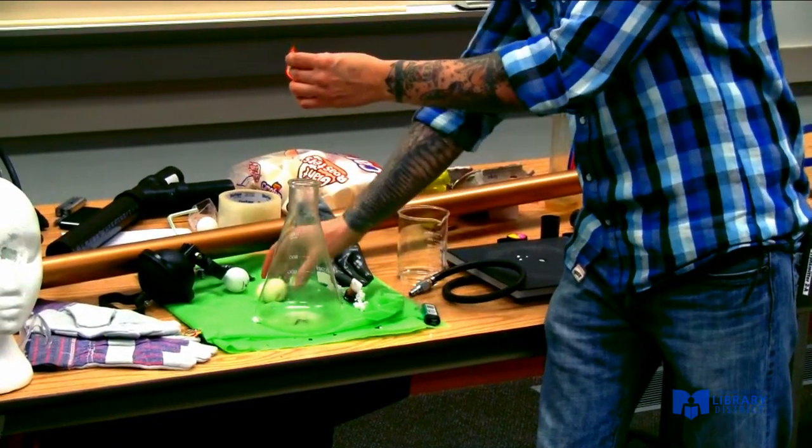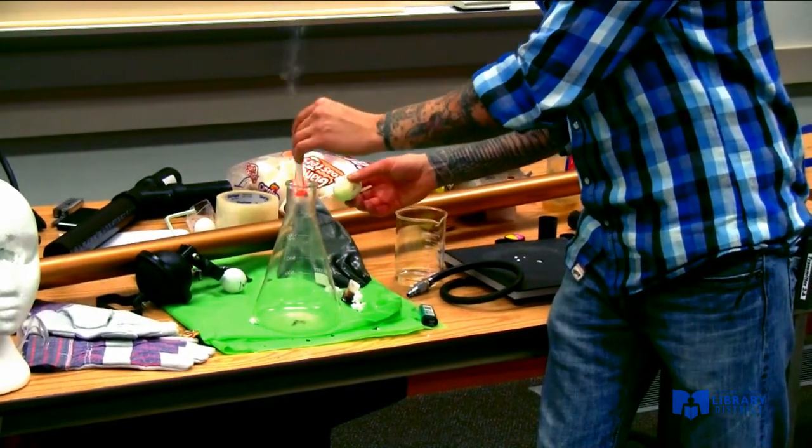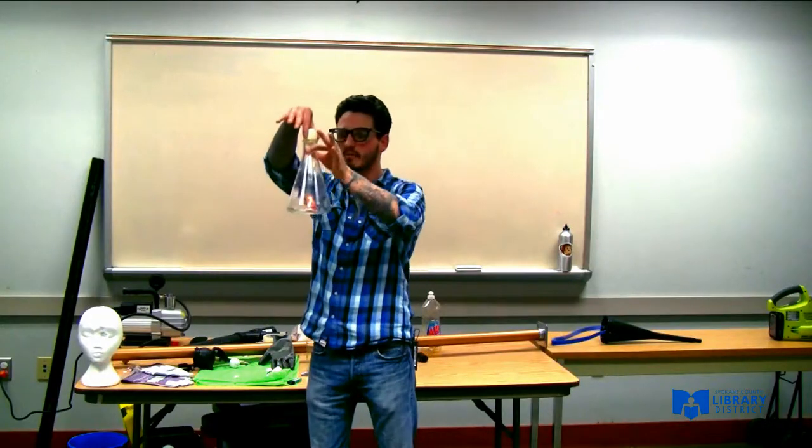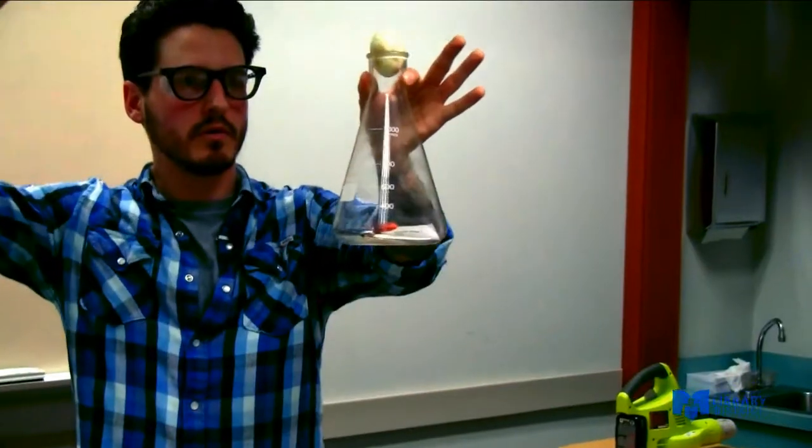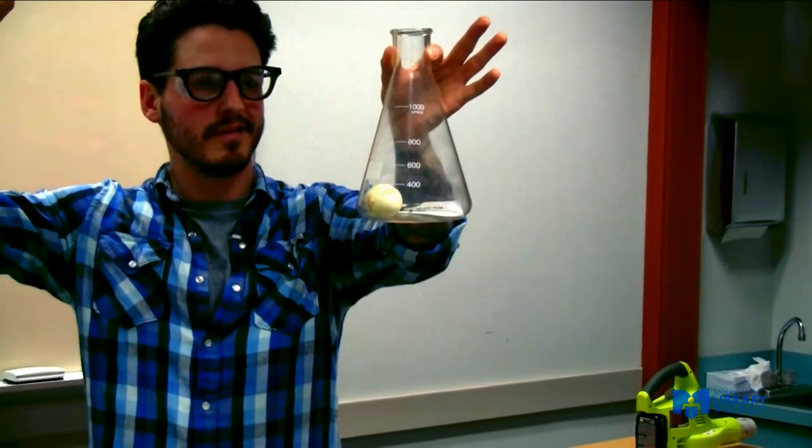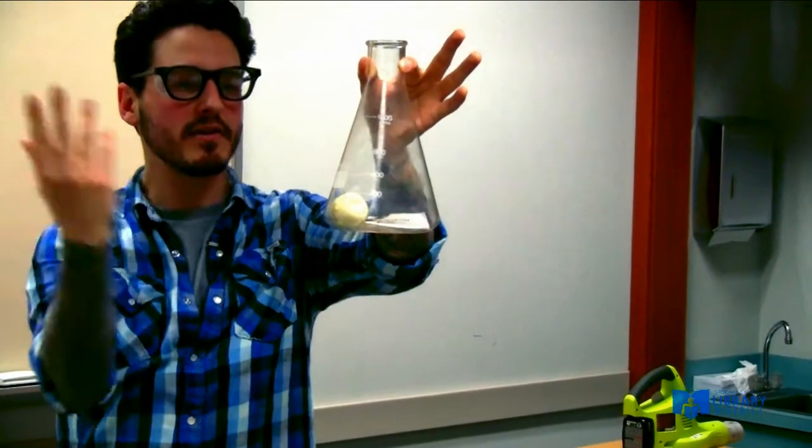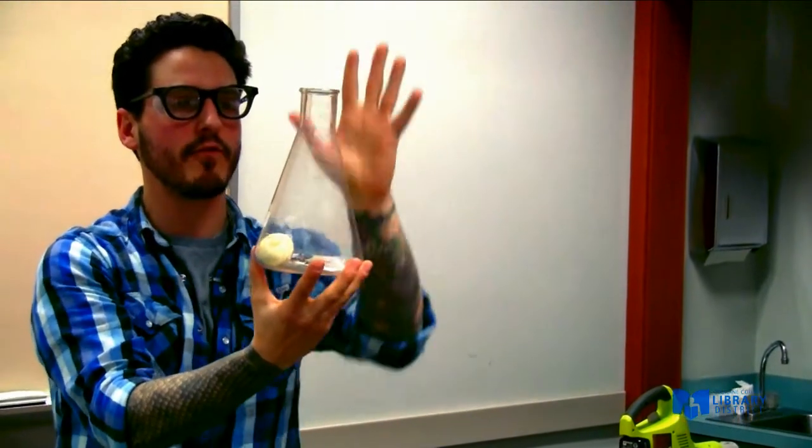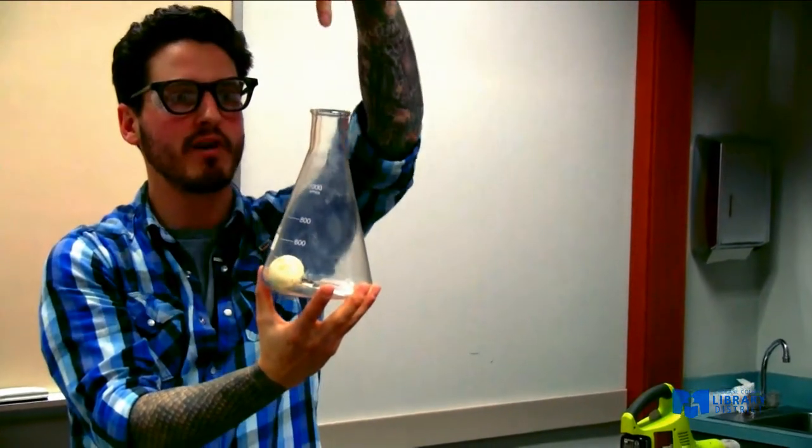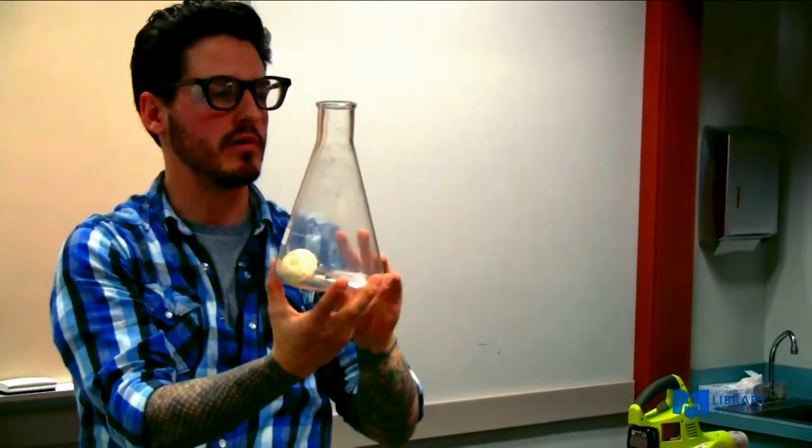Once this is burning well, we will make sure it goes into the bottle. We will place Egbert on top, just like that. As the fire uses up all the oxygen, there is not enough force pressing out, and the air pressure outside presses Egbert in.